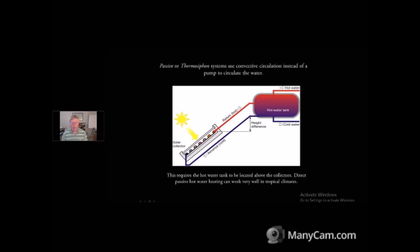These kinds of systems can work very well in tropical climates. What you're seeing here is also what's called a direct system, which we're going to get into in a minute, which basically means that we are running the hot water directly through the solar collector. So this is a very simple system, but it does require that you have the capability of physically supporting your hot water tank up high.